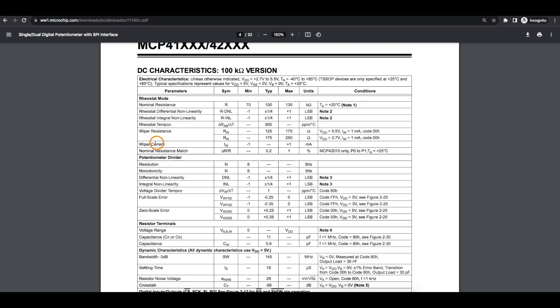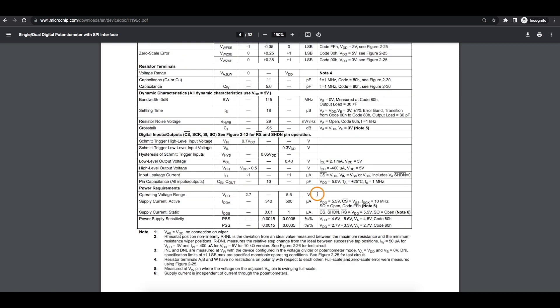And there's a maximum wiper current spec. So we have to make sure our circuit does not allow more than one milliamp to flow through this digital pot. And we also have to keep the voltage present on this potentiometer within our max VDD. So I'm operating at 5 volts. I just have to make sure this potentiometer itself is not going to see more than 5 volts.